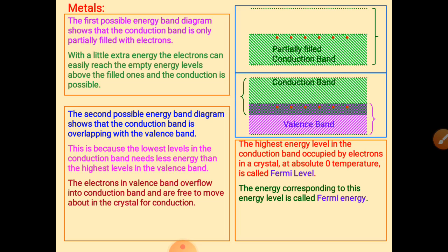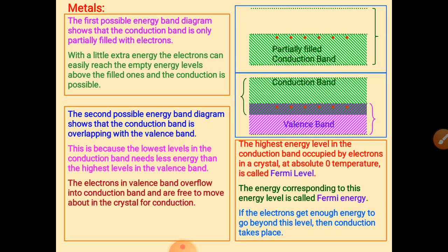At zero kelvin temperature, electrons can still gain higher energies and move toward the conduction band. The energy corresponding to the highest energy level in the conduction band occupied by electrons in a crystal at absolute zero temperature is called the Fermi level. Because electrons require only a very small temperature rise to gain this energy, they can move easily into the conduction band.